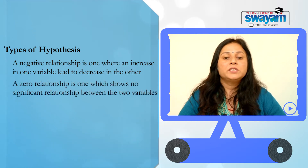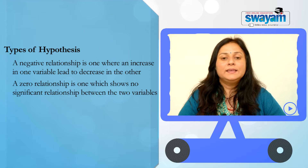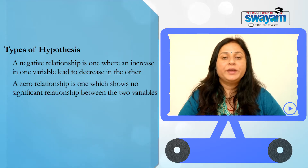A zero relationship is one which shows no significant relationship between the two variables. For example, having any kind of food will not fetch you marks. These are the types of relationships which variables have.